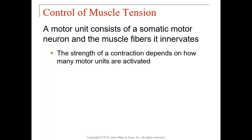That covers the basic contractions of a muscle and how you get energy to power them. Now let's talk about the forces muscles can generate — specifically, how do you control muscle tension, meaning the strength of a contraction. Imagine picking up a 300-pound dumbbell: you need a lot of tension. Versus picking up a feather, which requires very little force. So how do you control that?